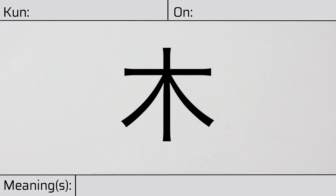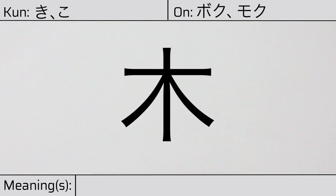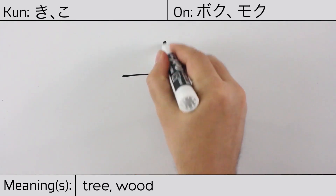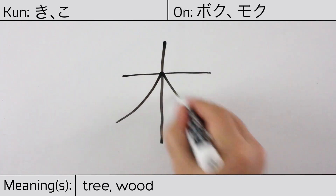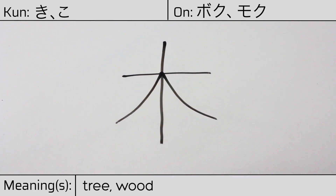Welcome to this lesson on Japanese kanji. Today, we'll be discussing this character. This kanji has kunyomi or Japanese readings of ki or ko, and it has onyomi or Chinese readings of boku or moku. This character has the meanings tree or wood. Here is the stroke order. This character doesn't have any radicals, but is itself a radical in many composite kanji.